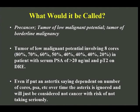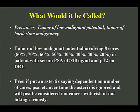What would we call it if we didn't call it cancer? Maybe a precancer lesion, a tumor of low malignant potential, or a tumor of borderline malignancy. So let's assume we have a patient with a tumor of low malignant potential instead of a Gleason 6. It involves eight cores — 80%, 70%, 60%, 50%, 40%, 30%, 20% — and the patient has a PSA greater than 20 and a palpable nodule. Is that a low malignant potential tumor?